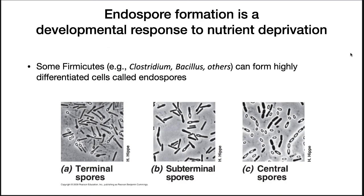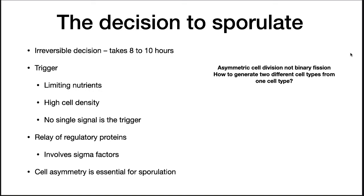One of the most studied seed approaches is endospore formation by some members of the Firmicutes. These bacteria can form highly differentiated cells called endospores. The images at the bottom show phase-bright circular objects inside cells that are sporulating. Sporulation is an irreversible decision where the cell goes through an asymmetric division. The trigger is limiting nutrients and high cell density. There is no single signal but a collection of limitations that drive the cell into the 8–10 hour sporulation process. A relay of regulatory sigma factors causes waves of gene expression in the parent cell and the forespore. Cell asymmetry is essential — this is not binary fission but a process that creates two unique compartments, one going on to become the parent cell and the other the forespore and eventually the spore.